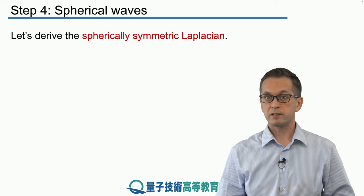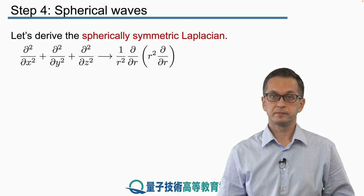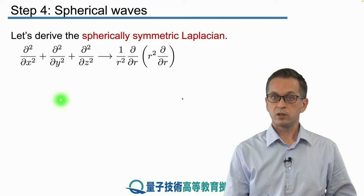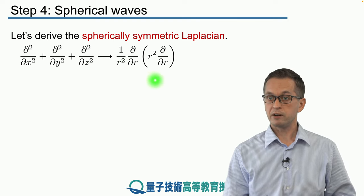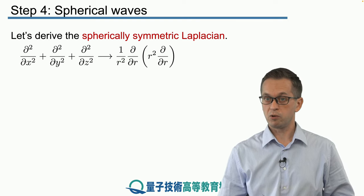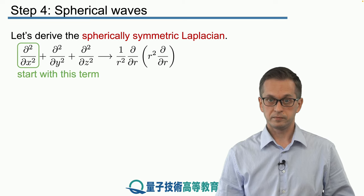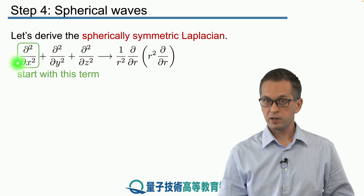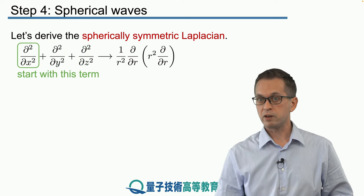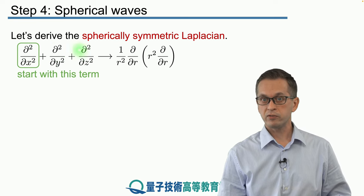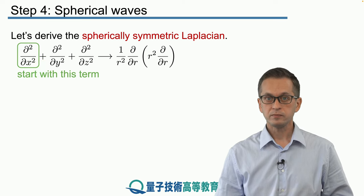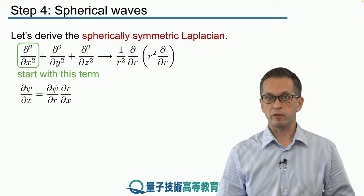We're not going to derive the full Laplacian expression — the full expression is rather daunting — but to give an idea of how it is obtained, we will derive just the radial part given by the first term. The other terms will be zero anyway since we are dealing with spherical symmetry. So let's derive the spherically symmetric Laplacian.